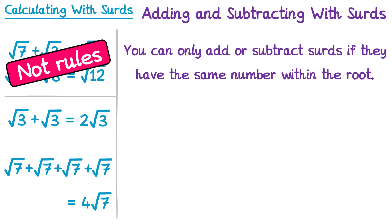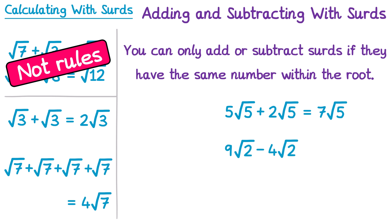We can extend this idea to questions like 5 root 5 plus 2 root 5. This is a bit like algebraic terms — if you add 5x and 2x you get 7x. So we add the 5 and 2 to get 7, and then it's 7 lots of root 5, or 7 root 5. The number inside the root doesn't change — we just add the numbers at the front, like coefficients. Similarly, 9 root 2 take away 4 root 2: we do 9 minus 4 to get 5, giving 5 root 2.